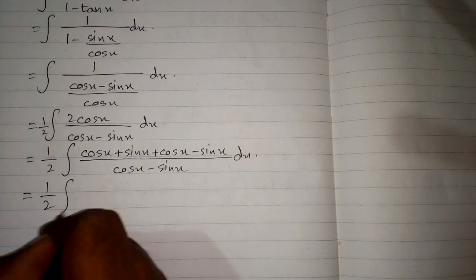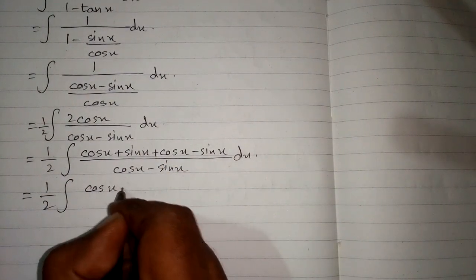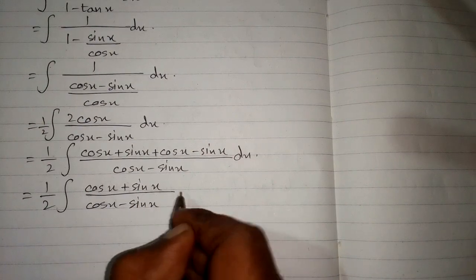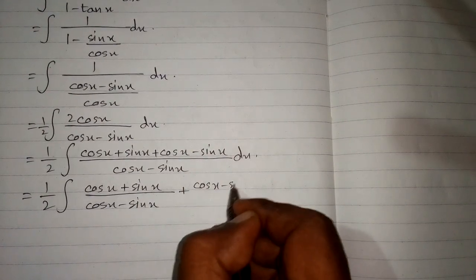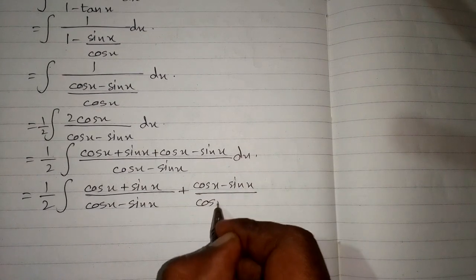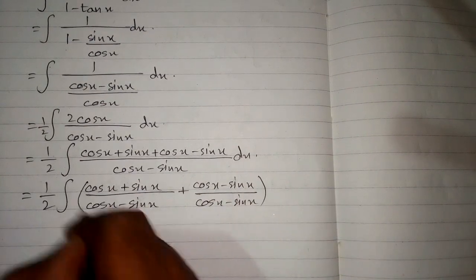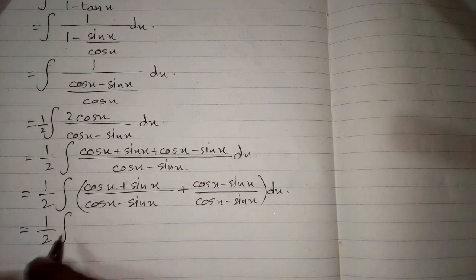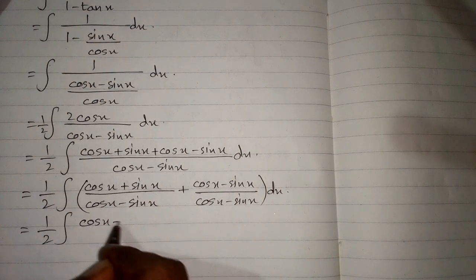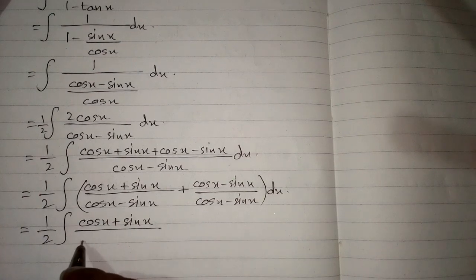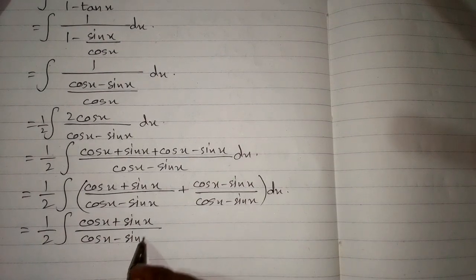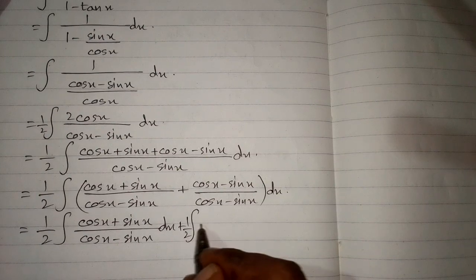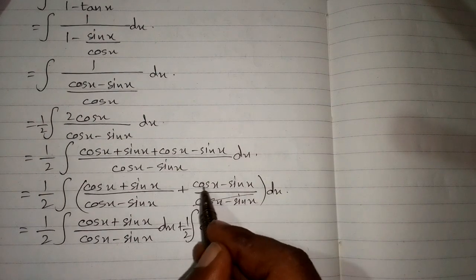Now the integral can be written as the sum of two fractions, that is cos x plus sin x upon cos x minus sin x, plus cos x minus sin x upon cos x minus sin x. Then we have two integrals: half integral of cos x plus sin x upon cos x minus sin x, plus half integral of dx, because we can cancel these factors.